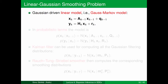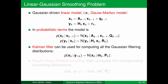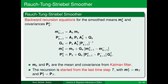Let's look at what the Rauch-Tung-Striebel smoother looks like. We have a linear Gaussian model where the transition density and measurement model are Gaussian, and we assume the Kalman filter has already computed the Gaussian filtering distributions. The Rauch-Tung-Striebel smoother then computes the corresponding smoothing distributions, which are also Gaussian. The algorithm is a backward recursion starting from the last time step's Kalman filter result, running from the last k to the first k, computing smoothing means mks and covariances Pks.